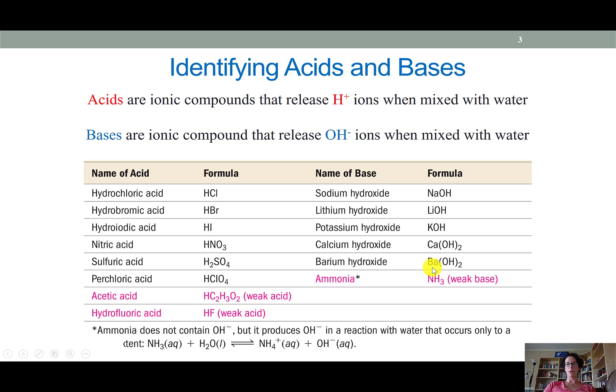However, if we look at the bottom of the table here, we'll see that ammonia produces hydroxide when it's mixed with water. It does this by taking one of the hydrogen atoms away from water so that H2O becomes OH-.